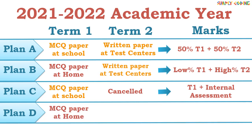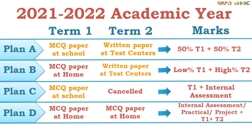Plan D is if both term 1 and term 2 exams are taken by students from home. In that case, results will be based upon internal assessment, practicals, project work, and the marks of term 1 and term 2 exams.